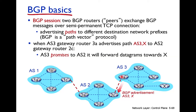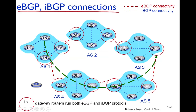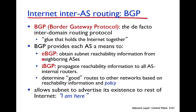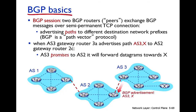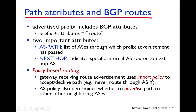Gateway router 3A advertises the AS3, X information to 2C using eBGP — exterior BGP protocol. When gateway router 2C receives this information, it then advertises this information to all its routers — not just neighbors but all internal routers — using iBGP, the internal BGP protocol.